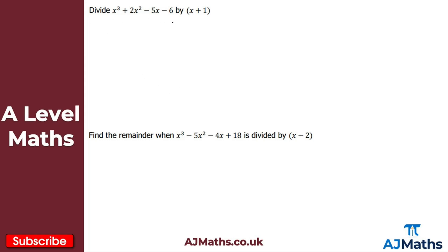So let's start with the first example. What I want to do is divide this cubic polynomial by x plus 1, so we're doing algebraic long division. Let's set up our bus stop: underneath we put our polynomial, which is x cubed plus 2x squared minus 5x minus 6, and what we're dividing by — x plus 1 — goes on the outside.